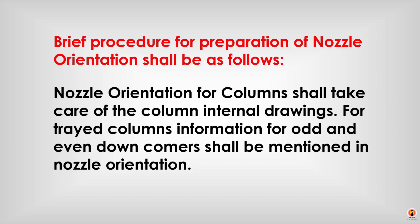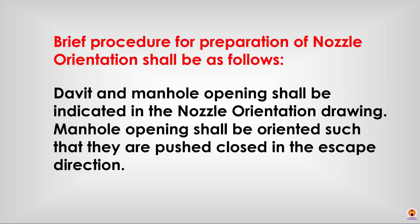Nozzle orientation for columns shall take care of the column internal drawings. For tray columns, information for inlet and outlet downcomers shall be mentioned in the nozzle orientation. Davit and manhole openings shall be indicated in the nozzle orientation drawing. Manhole openings shall be oriented such that they open in the escape direction.